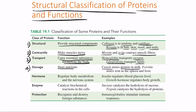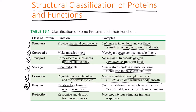Fourth are storage proteins, such as casein, which stores protein in milk, and ferritin, which stores iron in the spleen and liver. Fifth are hormone proteins, like insulin, which regulates blood glucose, and growth hormone, which regulates body growth. Sixth are enzymatic proteins — catalysts of biochemical reactions — such as sucrase, which hydrolyzes sucrose, and trypsin, which catalyzes protein hydrolysis. Seventh are protection proteins, such as immunoglobulins, which stimulate immune responses.